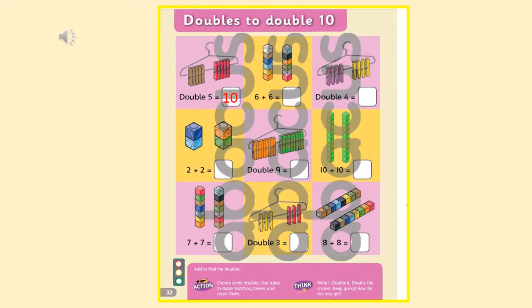For this activity, you need to double the cubes or the clothes pegs. If it helps, you can use some counters to help you. So read the number sentence and have a go at doubling. Think about how we did it earlier. And then for an extra challenge, you could go beyond 10. So try doubling 11, 12. Do you think you could double 13 as well?